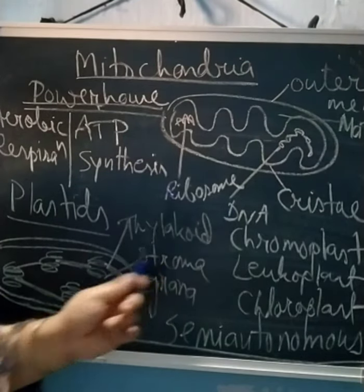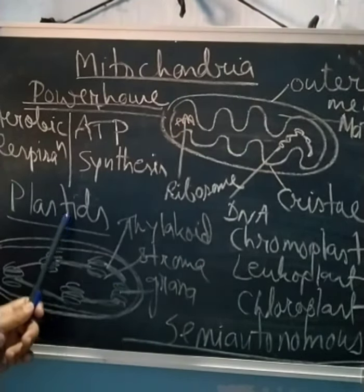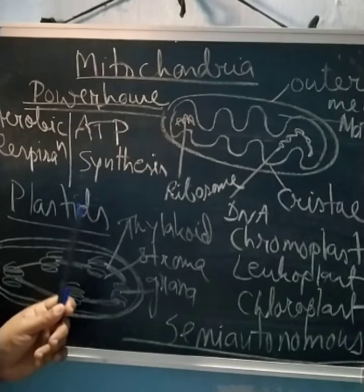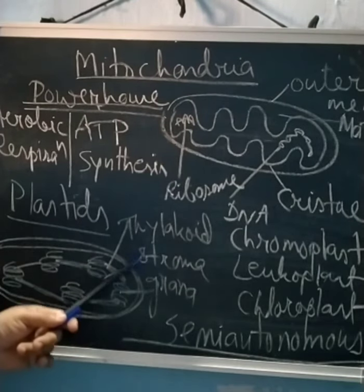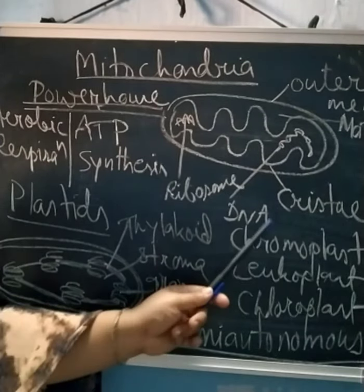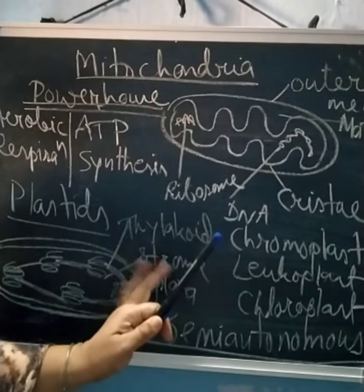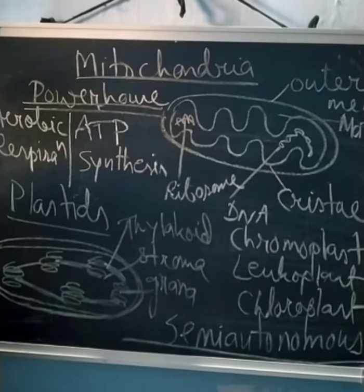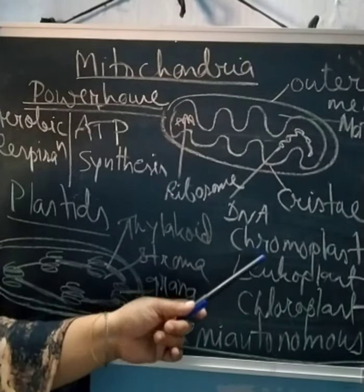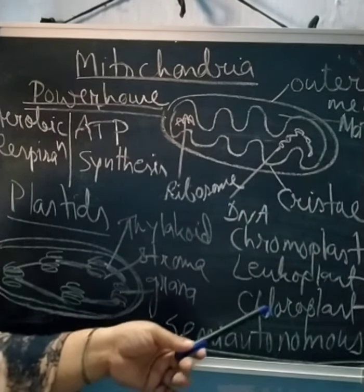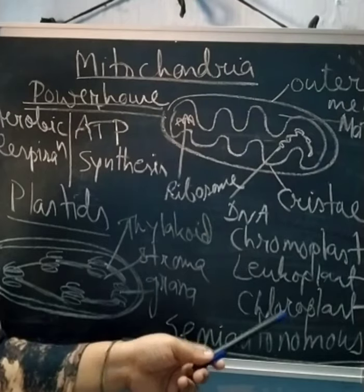Another semi-autonomous organelle is plastid. Plastids are found specifically in plant cells — they are not present in animal cells. Plastids are of three types: chromoplast, leukoplast, and chloroplast. Chromoplasts are found in colorful regions of plants, leukoplasts are found especially in roots which are white in color, and chloroplasts are found in green regions.